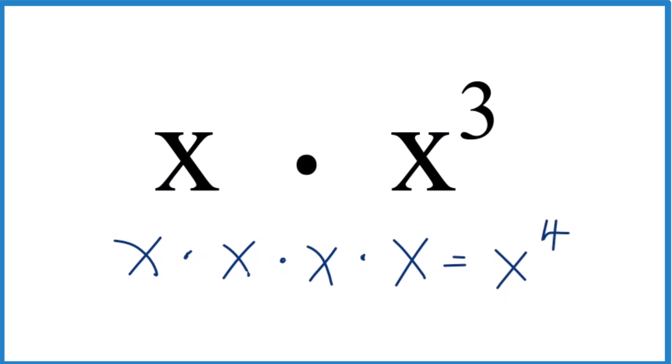Another way you could do it is think of it this way. Think of this as x to the one. Still x, we don't usually write that, but it's x to the one.